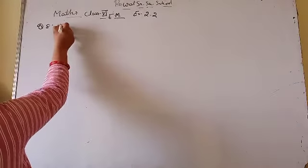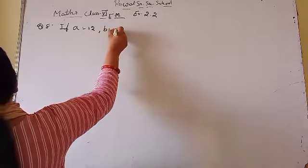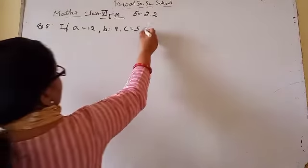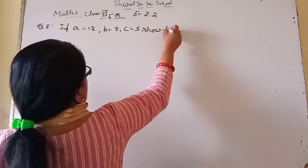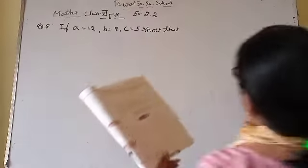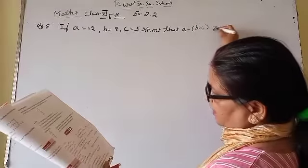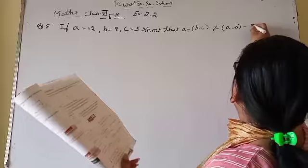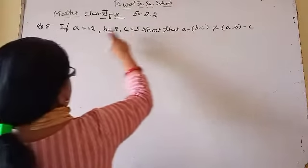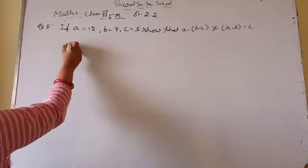If A is equal to 12, B is equal to 8 and C is equal to 5. Show that A minus B minus C is not equal to (A minus B) minus C. इसमें value रखनी है — जहाँ A है वहाँ 12, जहाँ B है वहाँ 8, और जहाँ C है वहाँ 5 रख दो।